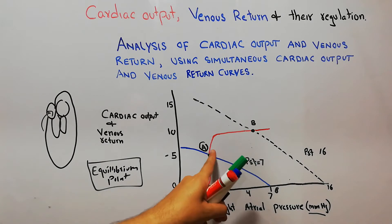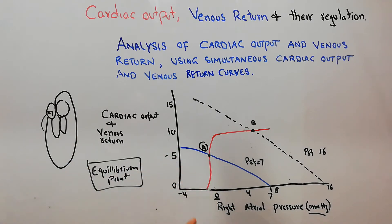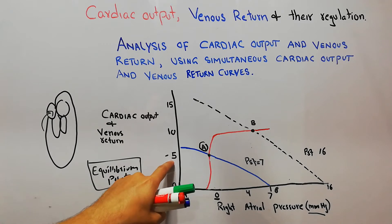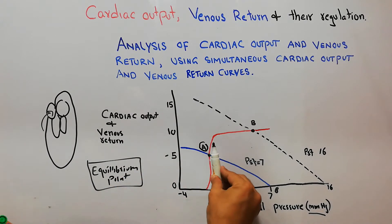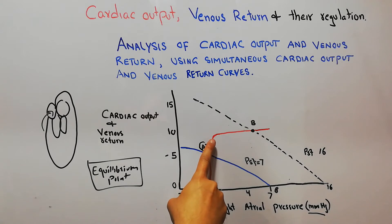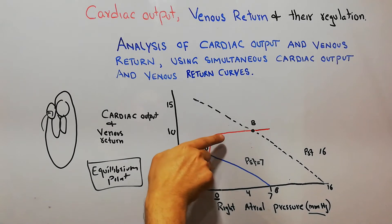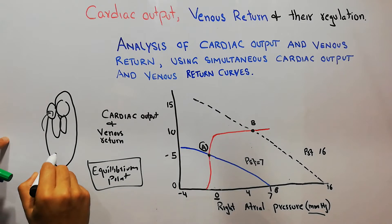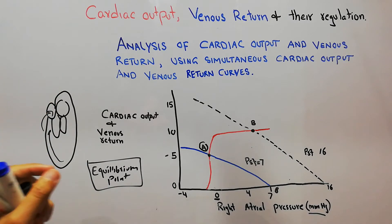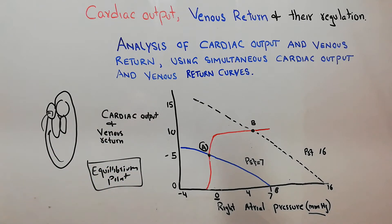At the equilibrium point, the cardiac output is 5 liters per minute, the venous return is also 5 liters per minute, and the right atrial pressure is 0 mm of mercury. If the right atrial pressure starts increasing above this level, the cardiac output will initially increase slightly and then plateau.